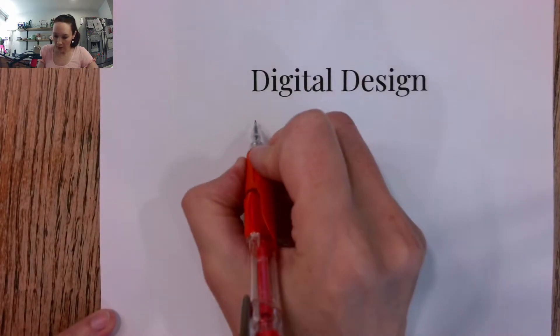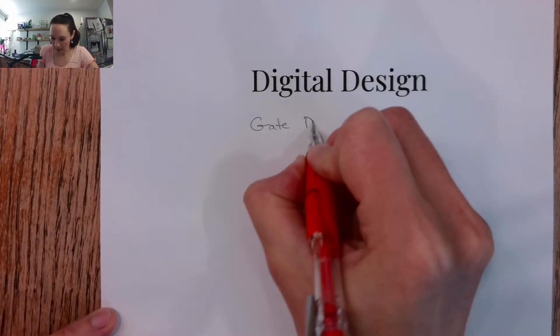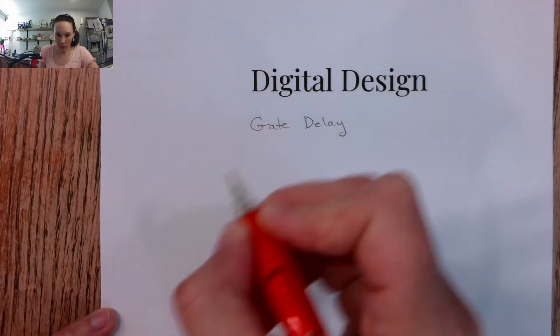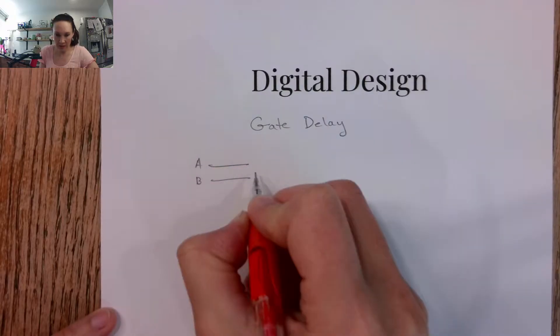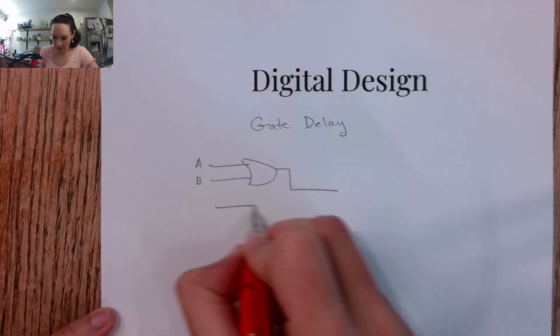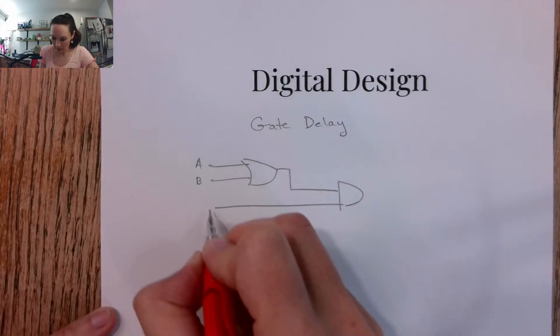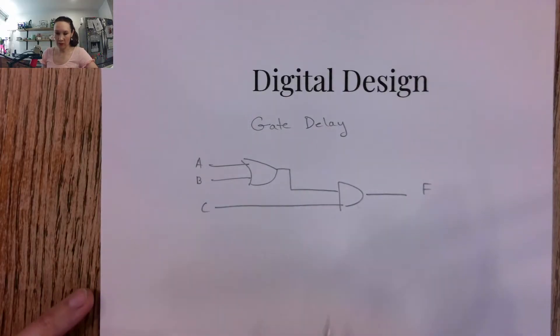Hi students, today I want to explain the concept of gate delay. Remember when we were doing these two-level circuits, suppose we have A and B that are ORed together, and then that result gets ANDed with C, and we have our result F out here on the other side.